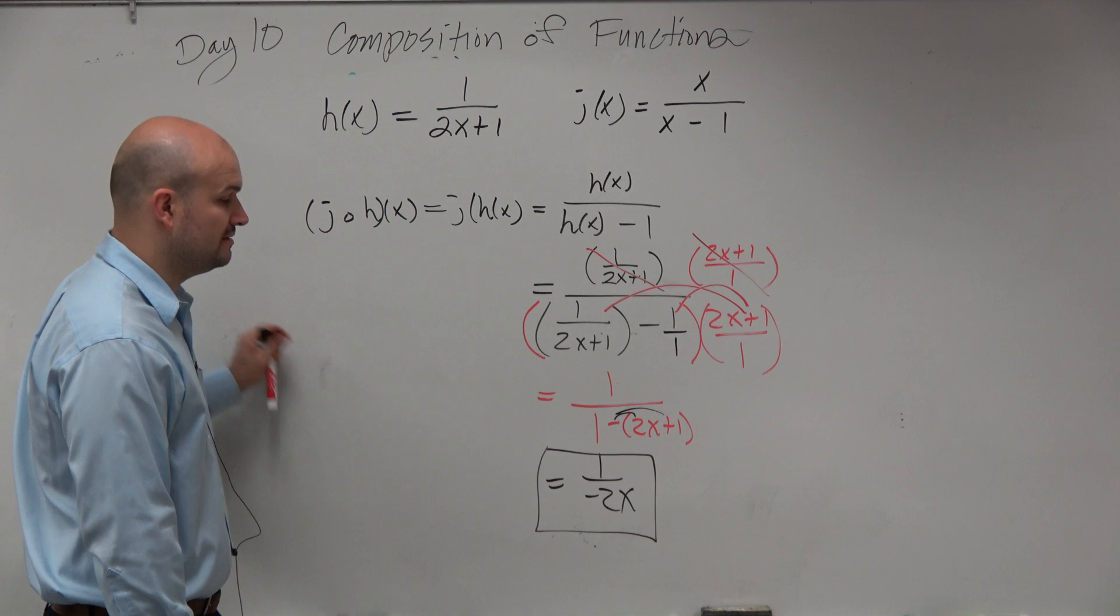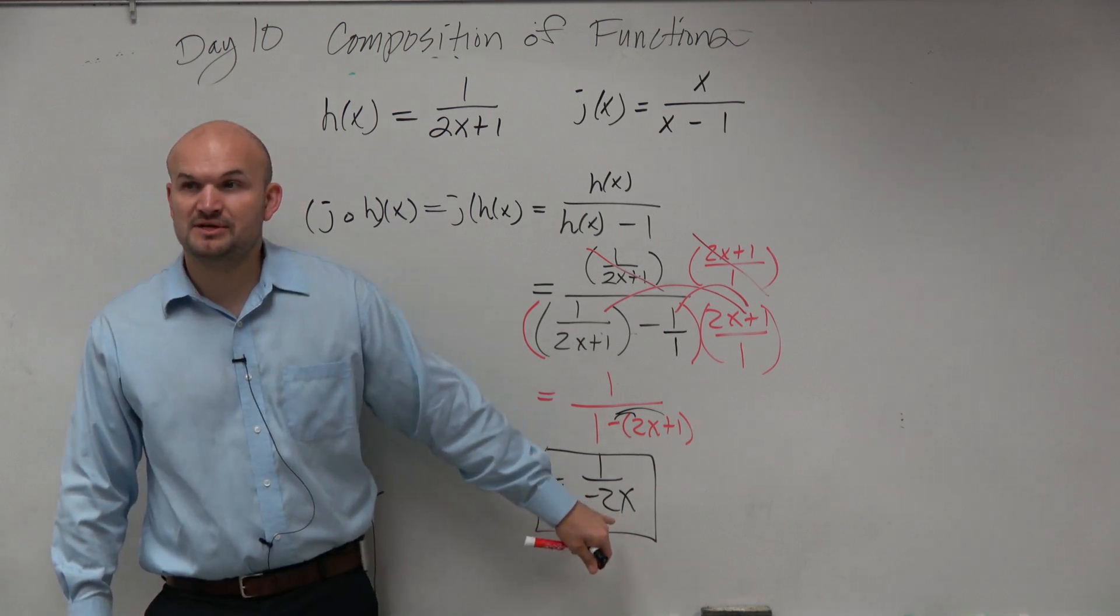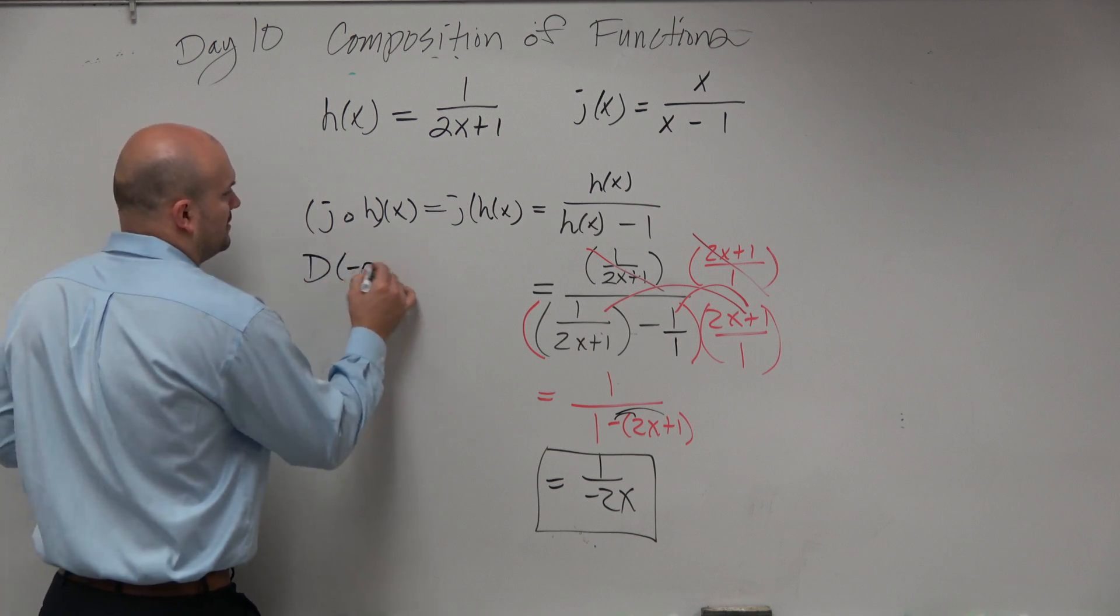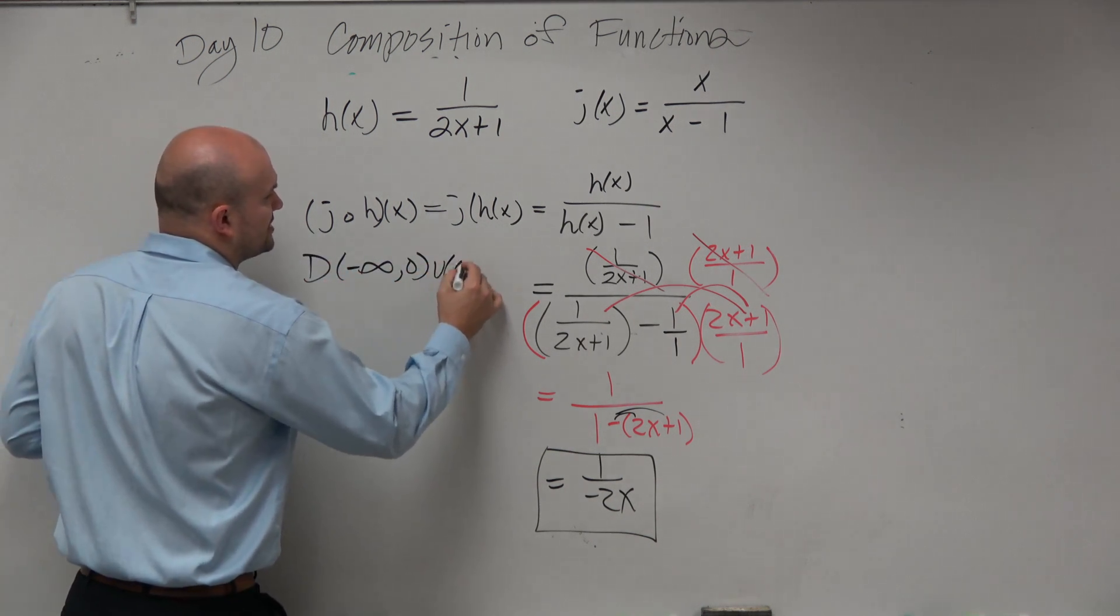Now, let's find the domain. What values are going to make the denominator 0? 0. So, the domain, you get negative infinity to 0, union 0 to infinity.